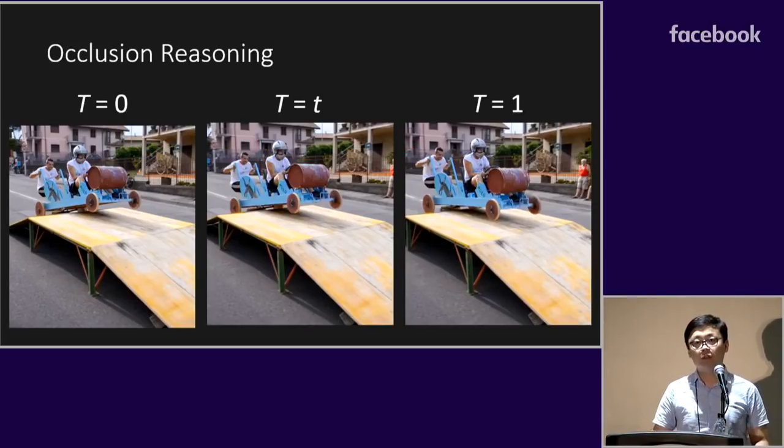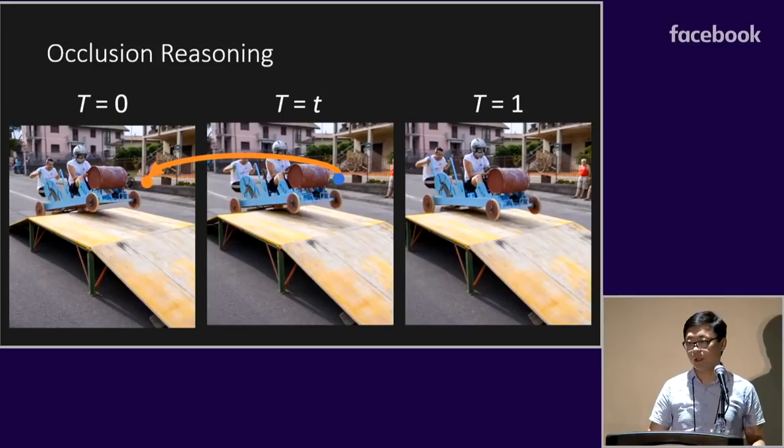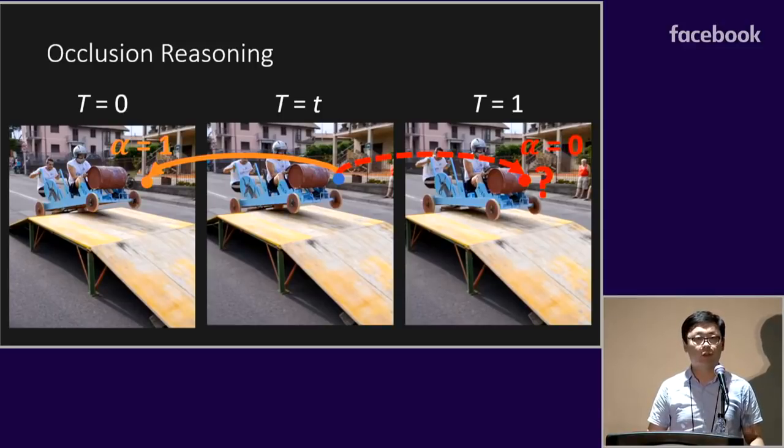However, not all pixels at time step t can find their correspondences in input images due to occlusion. To this end, we predict visibility weights of both input images to control their contributions to intermediate frame synthesis to deal with occlusion.